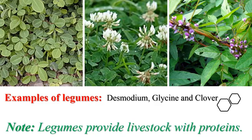Briefly, examples of legumes include desmodium, glycine, and clover. You need to understand that legumes are very important to animals because they provide animals with protein for the body. Remember the functions of protein — the repair of worn-out tissues — and this applies to these particular animals as well. So examples of legumes are desmodium, glycine, and clover.